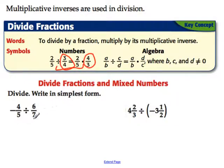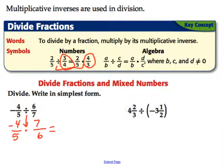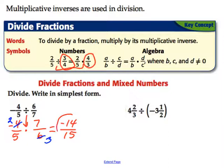To divide fractions and mixed numbers: we have negative 4 fifths divided by 6 sevenths. The first fraction stays the same, we change the division sign to multiplication, and we flip 6 sevenths to 7 sixths. We can reduce — dividing both 6 and 4 by 2. Now multiply across: negative 2 times 7 is negative 14, and 5 times 3 is 15. Since we reduced before multiplying, the answer is already in reduced form: negative 14 fifteenths.